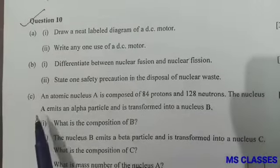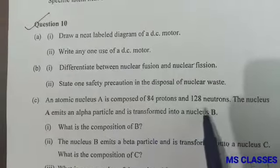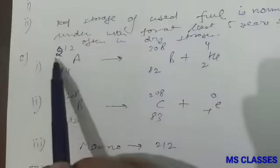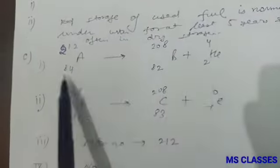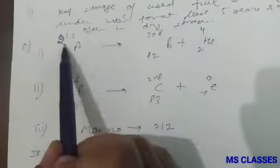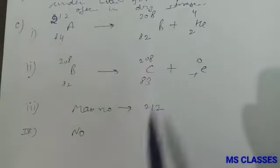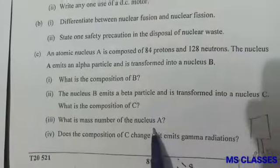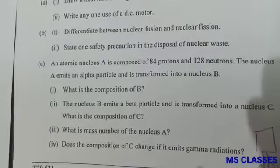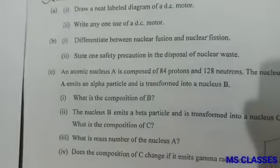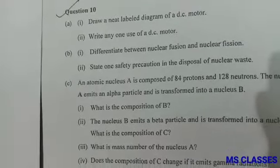Part (c): An atomic nucleus is composed of 84 protons and 128 neutrons. The nucleus A emits an alpha particle and is transformed into nucleus B. What is the composition of B? As you can see, it's 84 and 212, and it is emitting alpha, so 82 plus 2 gives 84. This is 82 and 208 plus 4 is 212, so that is 208. The nucleus B emits beta particle and is transformed into C. What is the composition of C? This is 83 and that is 208. What is the mass number of nucleus A? That is 212. Does the composition of C change if it emits gamma radiation? No, because in gamma there is zero charge and zero mass. So I hope the solution of Section A and B is clear to you all. In case of any doubt, please comment in my comment section. Thank you.